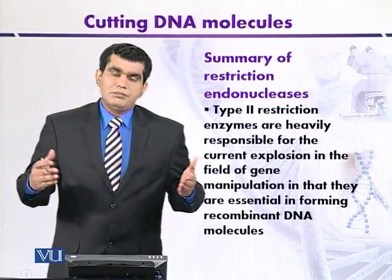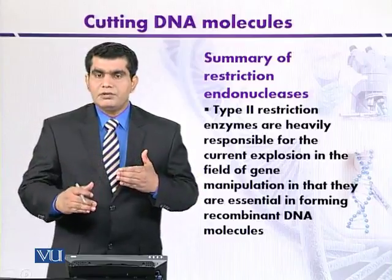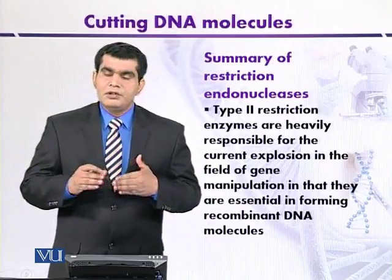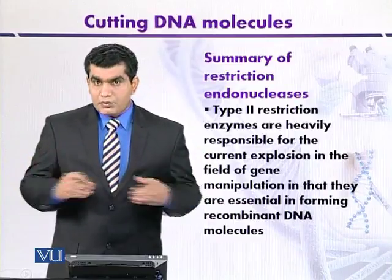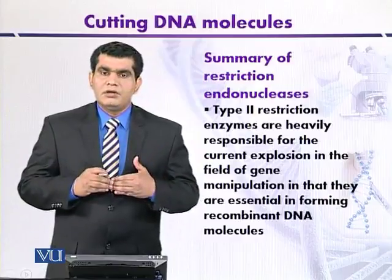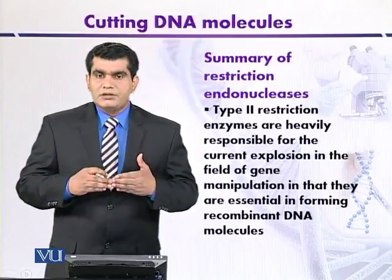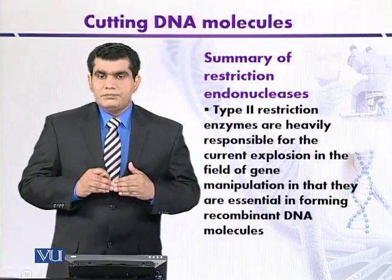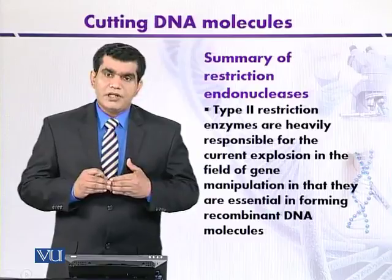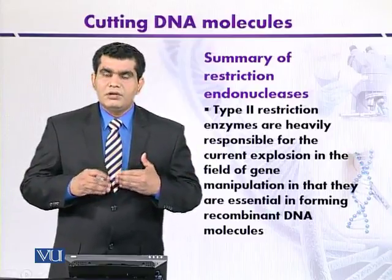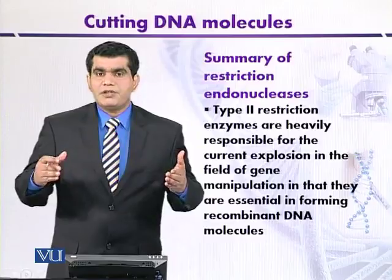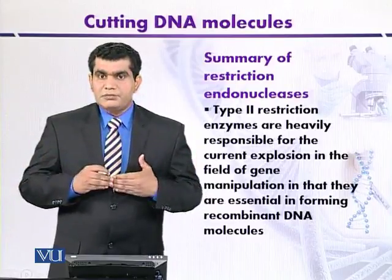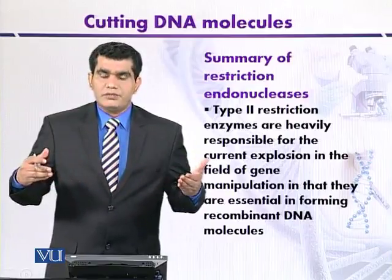Some DNA fragments have blunt ends. For example, if DNA is digested with the HaeIII restriction enzyme, the DNA fragments produced have blunt ends. Blunt end means there are no unpaired bases at the end of the DNA, so both fragments of DNA have equal length. On the other hand, some fragments of DNA after digestion with restriction enzymes will have sticky or cohesive ends.